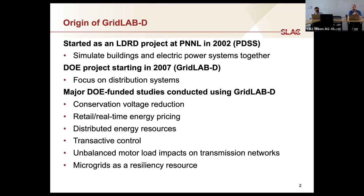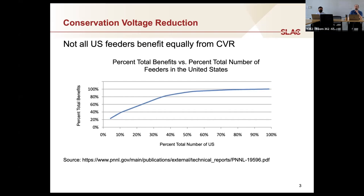Another area was fault-induced delayed voltage recovery: if there's a fault on the system and motor loads with varying inertias cause voltage sags, those could trigger a cascade of motor stalls that drag the whole system down. And of course microgrids. On conservation voltage reduction, we looked at a taxonomy set of 25 feeders drawn from across the U.S., with a weighting model allowing us to project results nationally.